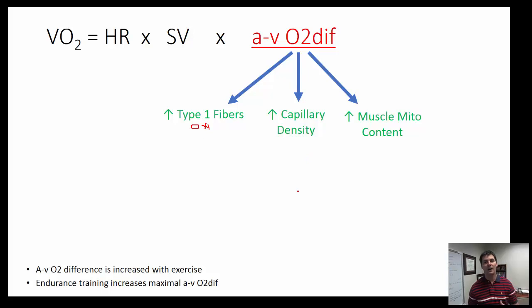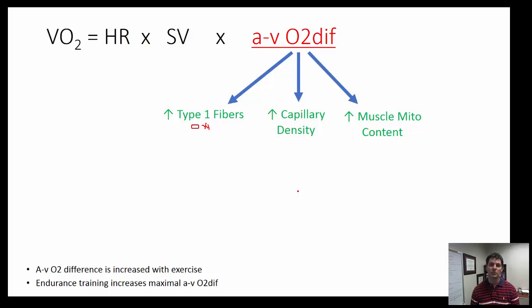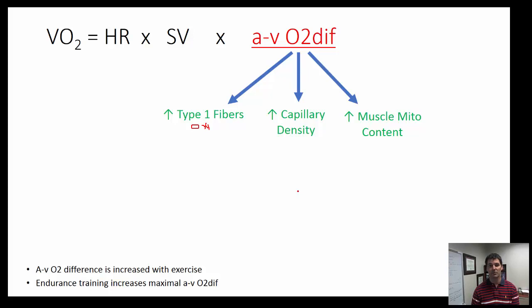In summary, we've covered the Fick equation — looking at oxygen consumption as it relates to cardiac output and AVO2 difference. Under most conditions, most individuals are limited by the cardiovascular side of things — the delivery of oxygen — not the usage of oxygen in skeletal muscle. So from the Fick equation perspective, we can think about the cardiac output and blood flow side as the primary limiter.